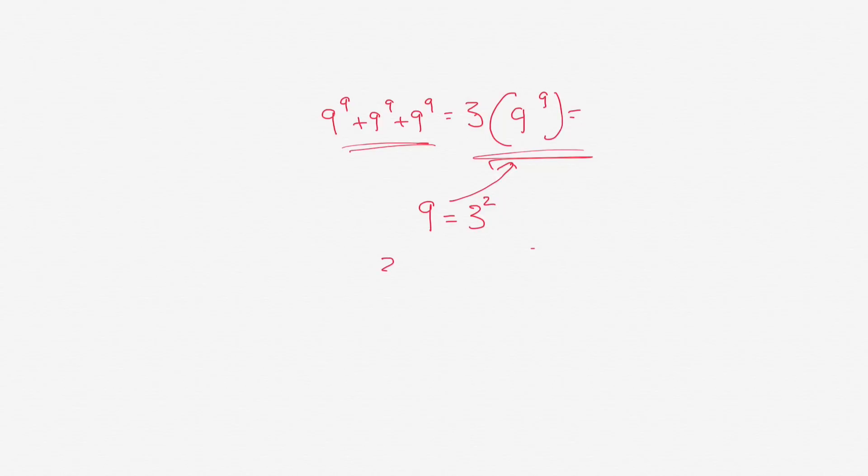So really what we have is 3 times 3 squared to the 9th power. Okay? And then whenever we have 3 squared to the 9, what we do to that 2 and 9 we actually multiply it. We don't add it. We don't subtract it. We don't divide it. We multiply it. So 3 squared to the 9th power is just like 3 to the 18.